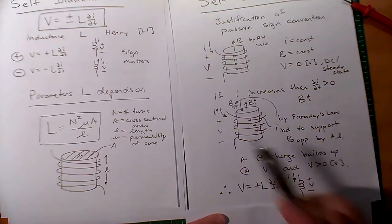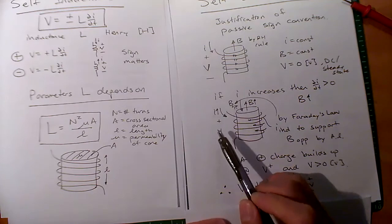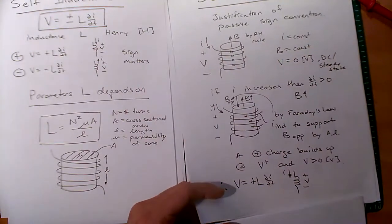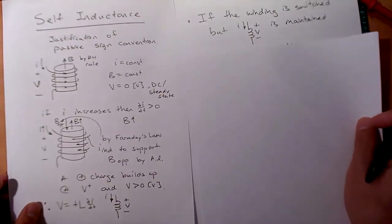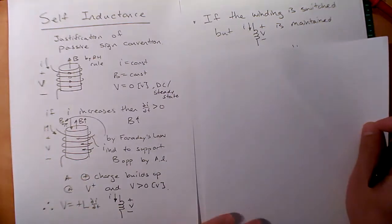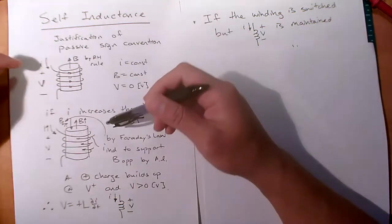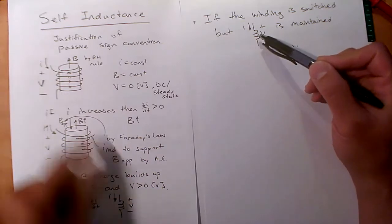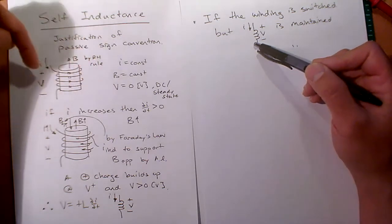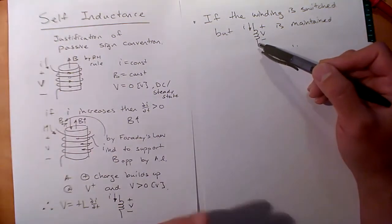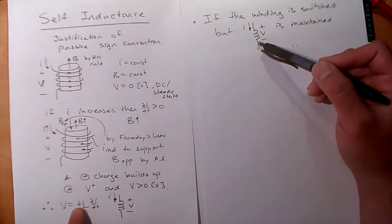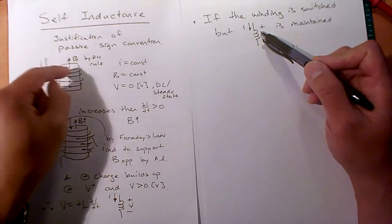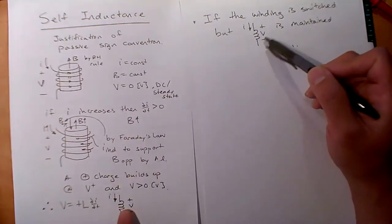This is similar to the back EMF in motors — back EMF again comes from Faraday's law. Everything has a connection back to those seven fundamentals. Now, what if you switch the windings — wrap it back to front instead of front to back? You'd still maintain I going to the positive terminal, but what would change is the internal magnetic field and all the induced stuff. You'd get a double negative so the end result is still the same.